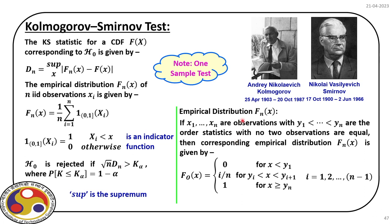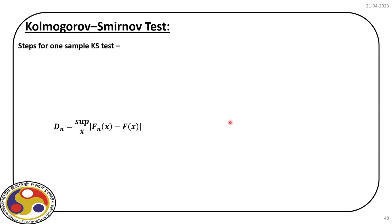Let us review how to evaluate the empirical distribution. We have x₁, x₂, ..., xₙ as observations. With y₁, y₂, ..., yₙ in increasing order (the order statistics, with no two observations equal), the corresponding empirical distribution Fₙ(x) can be found from the given expression. These are the steps in the Kolmogorov-Smirnov test.